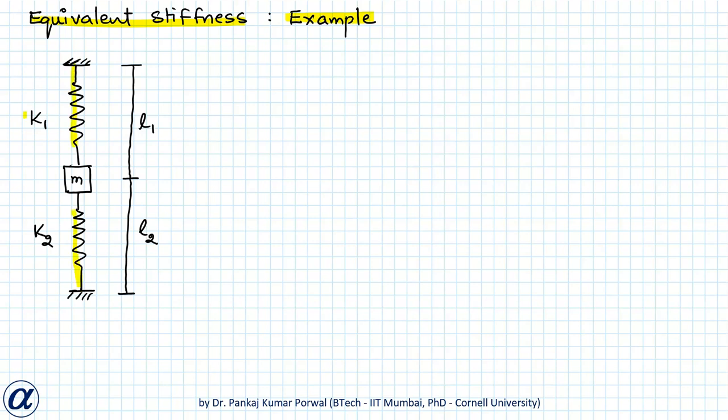Their stiffnesses are k1 and k2, their lengths are l1 and l2, and there is a block of mass m between the two springs. If we displace this block of mass m by distance x in this direction,